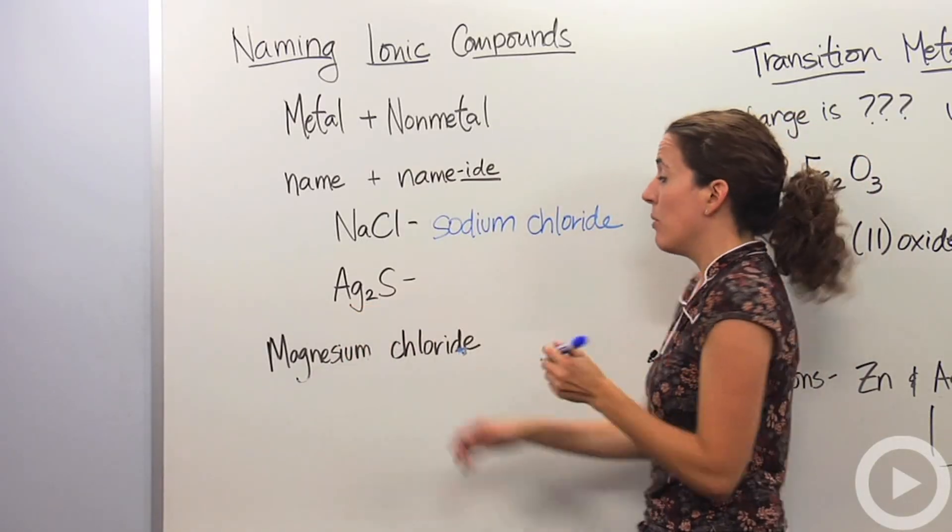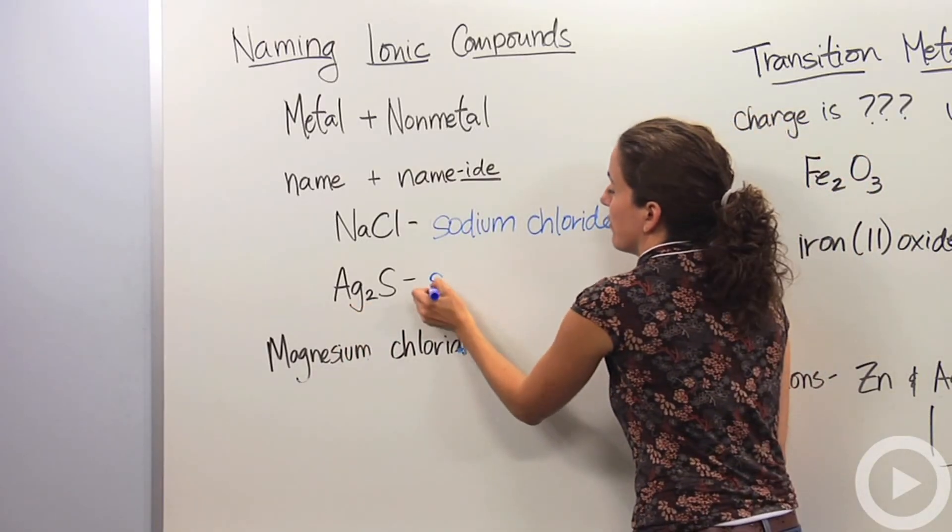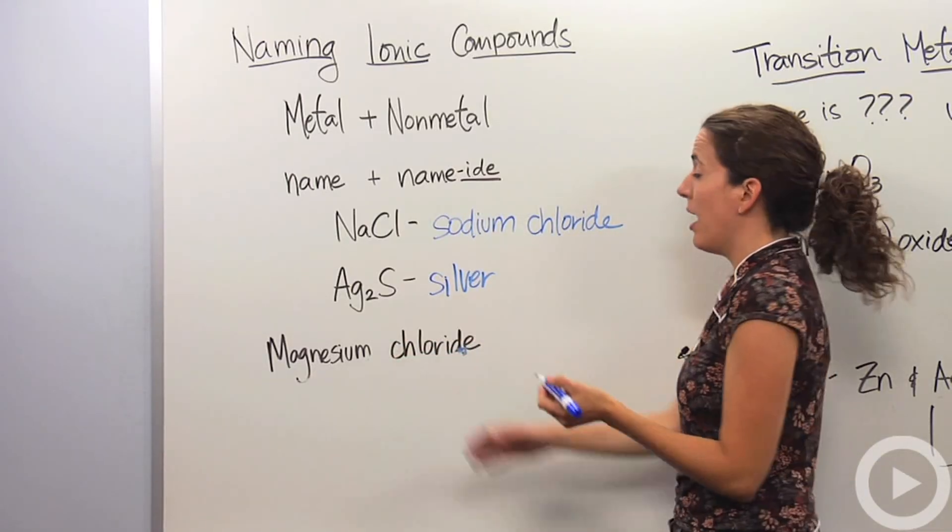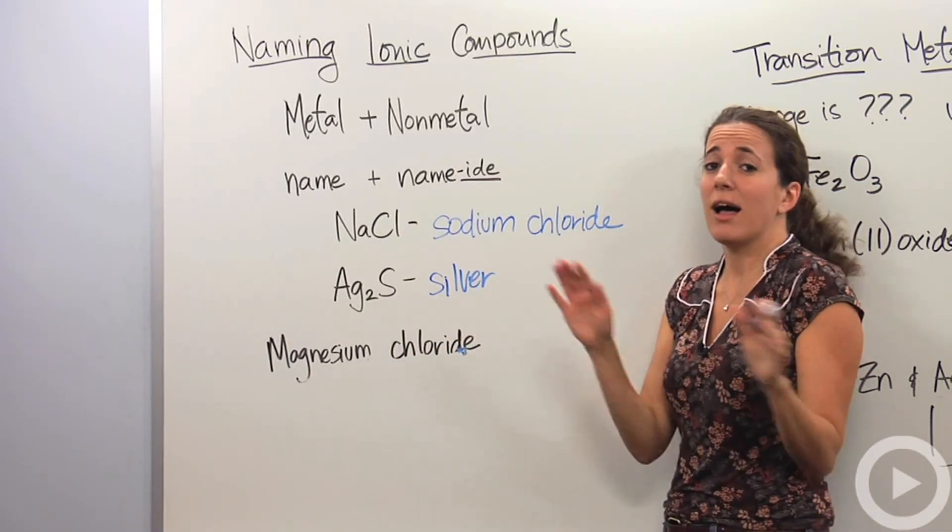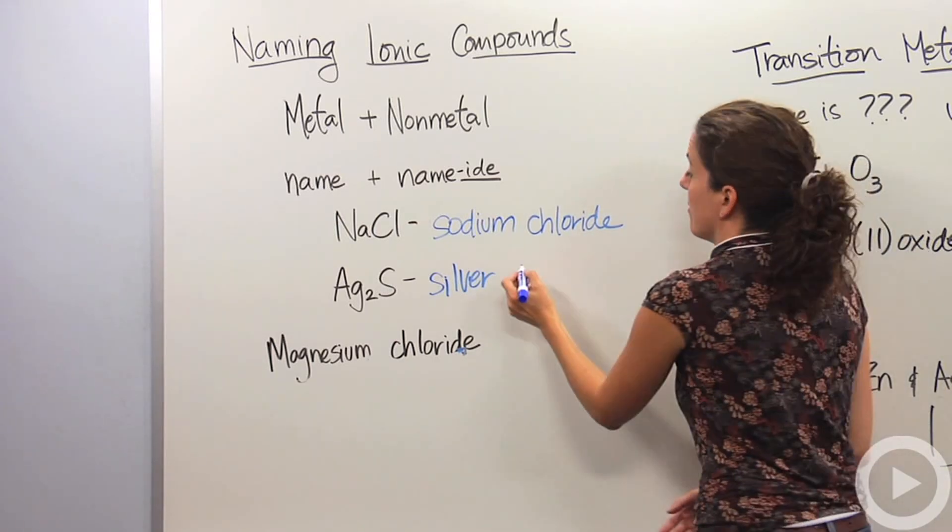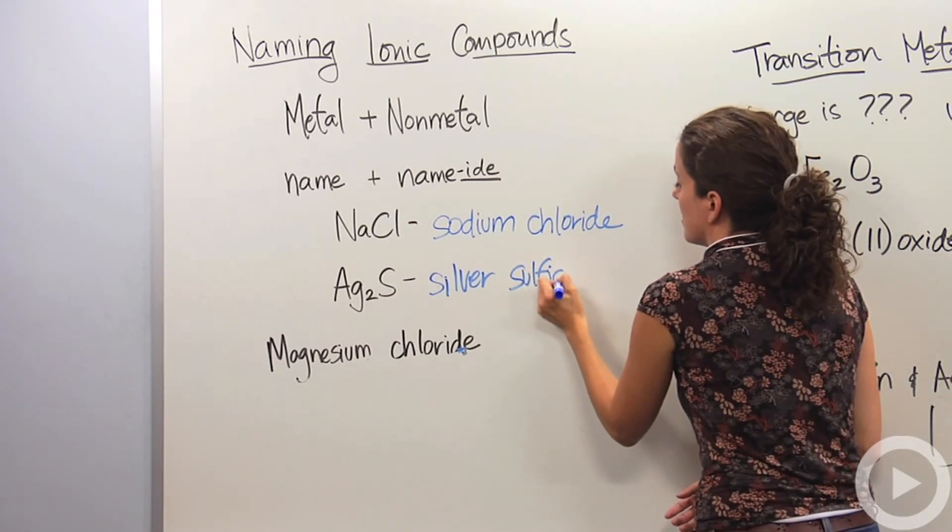We have Ag2S. We're going to call this silver, same as on the periodic table. Then we have sulfur. You'd think it'd be sulfuride. It's not sulfuride. That's a common mistake I see amongst a lot of students. It's sulfide.